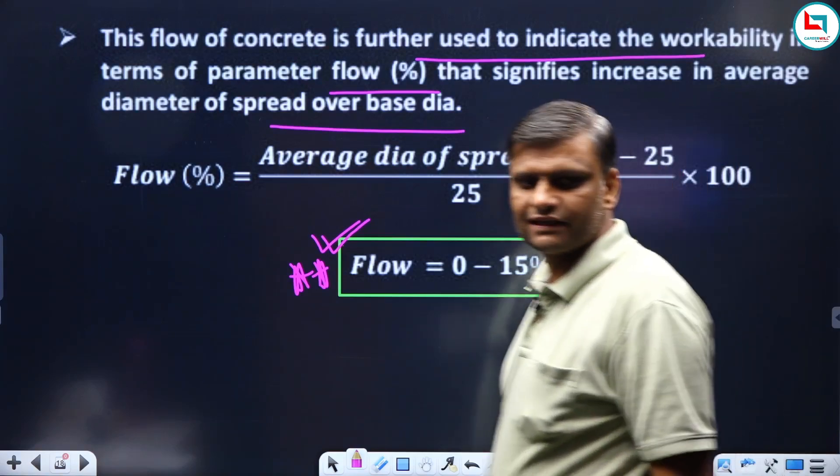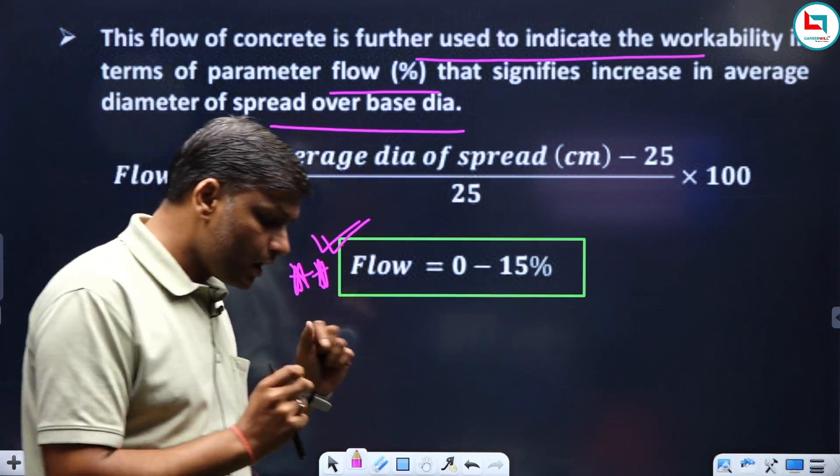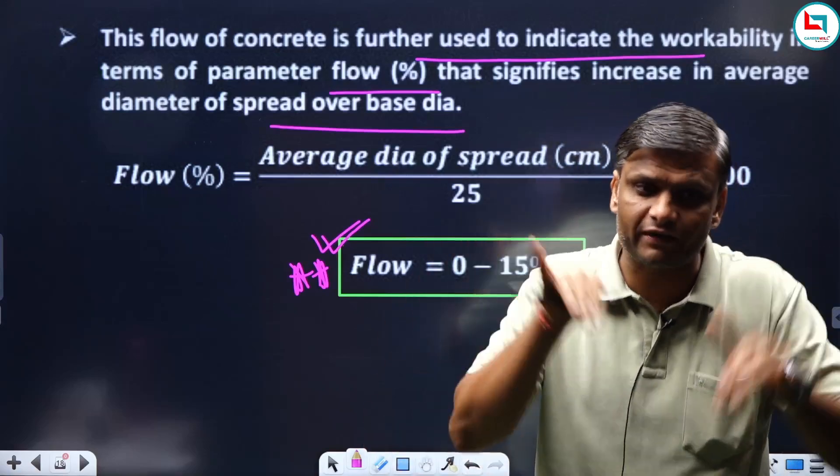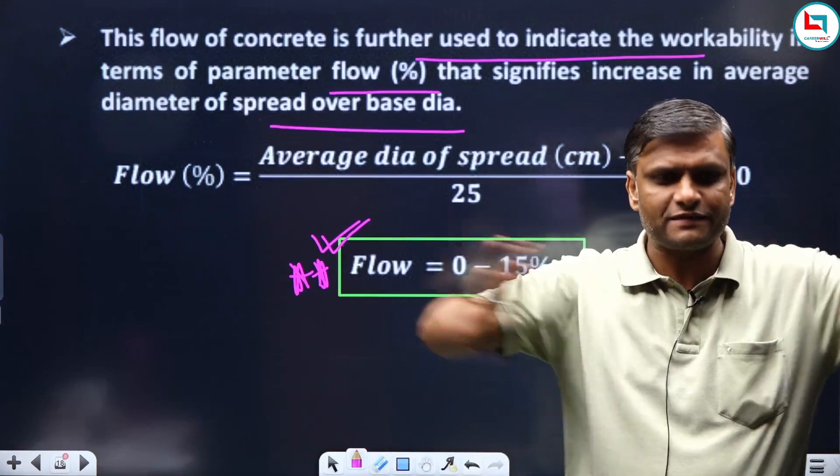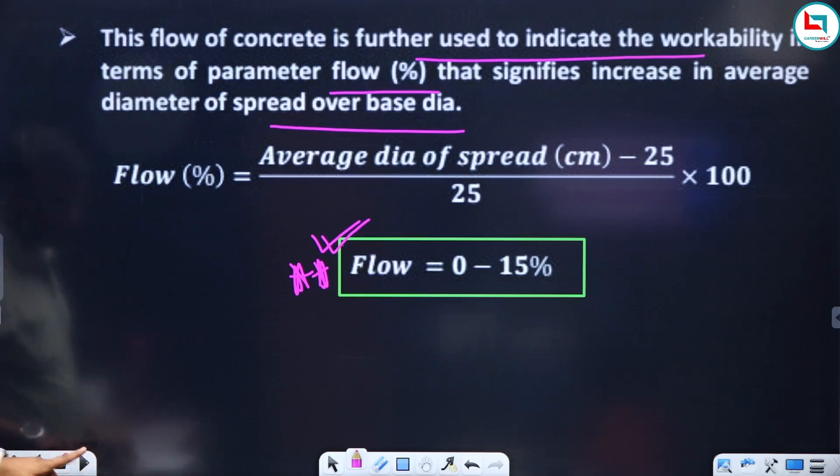Flow percentage value basically should be in between 0 to 15 percent. If you have zero value, it means flow doesn't happen. If my flow percentage is greater, it means it will become more workable.